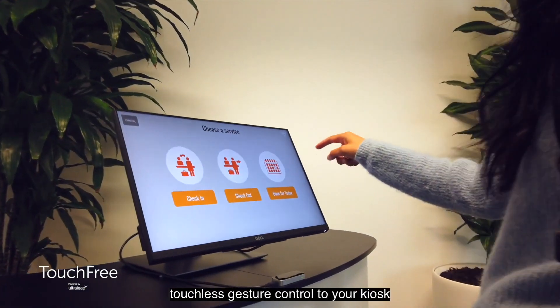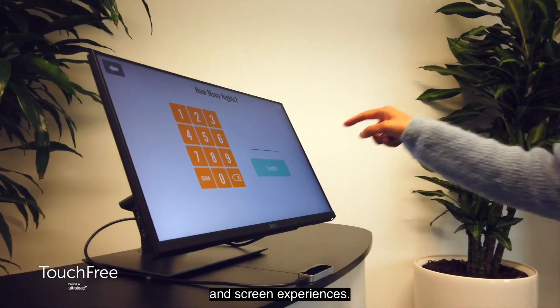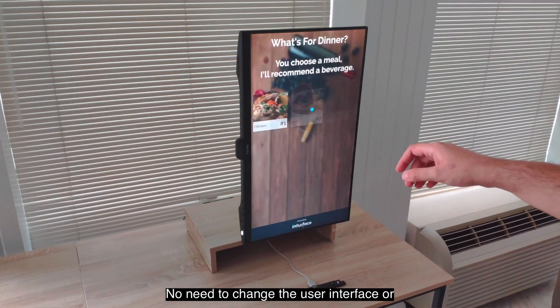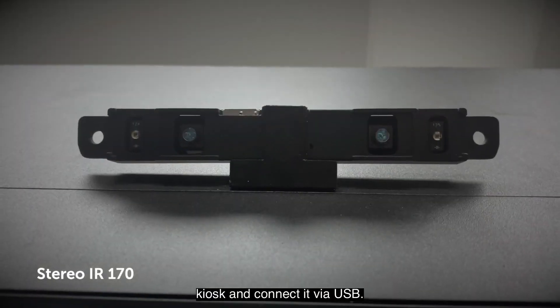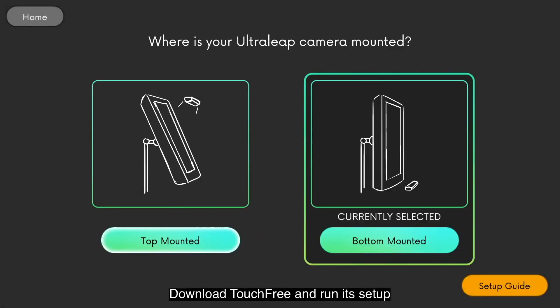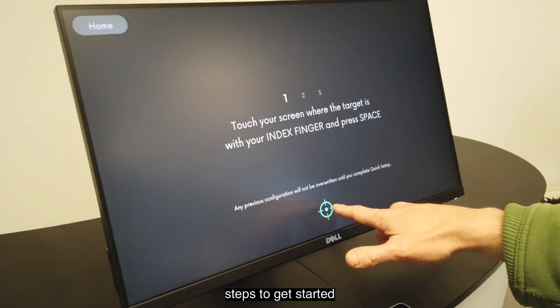The simplest way to add touchless gesture control to your kiosk and screen experiences. No need to change the user interface or write a single line of code. Mount an Ultraleap camera module to your kiosk and connect it via USB. Download Touchfree and run its setup steps to get started.